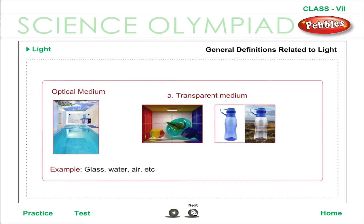Optical medium: the term medium is used for any substance through which light might pass — for example, glass, water, air. Transparent medium: substances that allow most of the light to pass through them are called transparent substances. We can see through them clearly. A transparent substance is called an optical medium; examples include glass, water, and air.